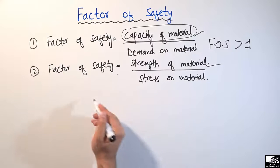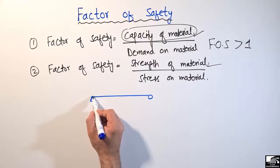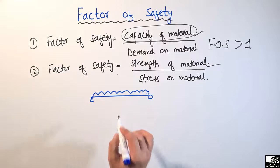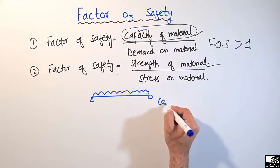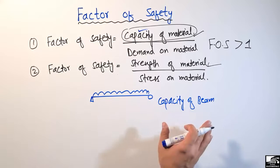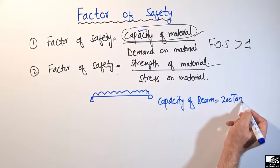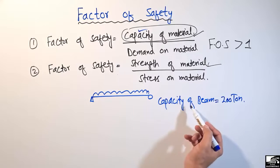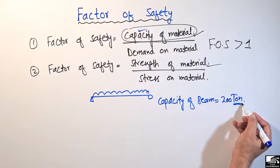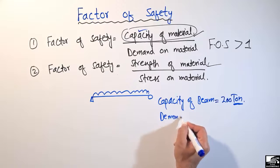Now let's consider a simple example of a beam — a simply supported beam with a uniformly distributed load acting on it. Let's suppose the capacity of this beam to take the load is 200 tonnes. This is just an example; normally we express beam capacity in terms of moment, but here we assume its capacity to take the load is 200 tonnes.